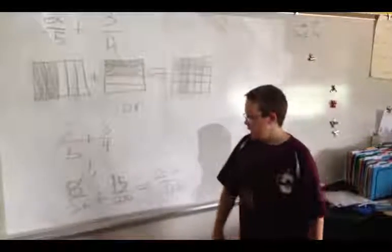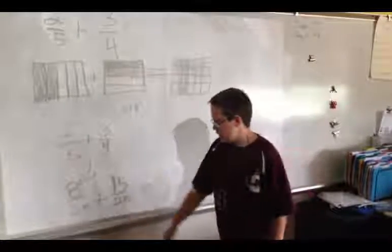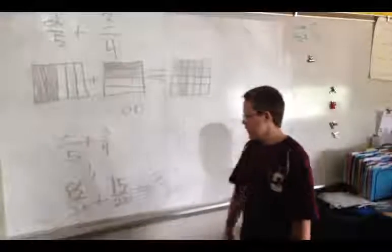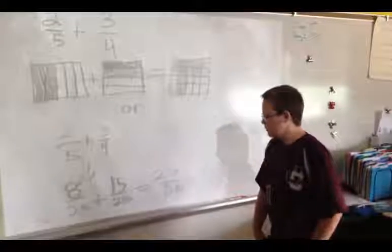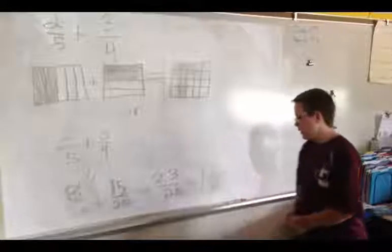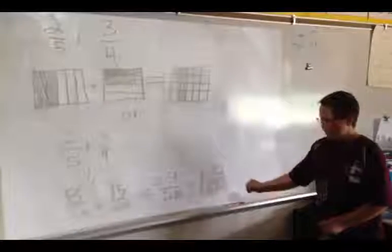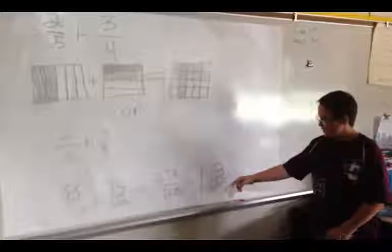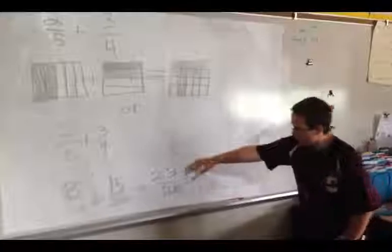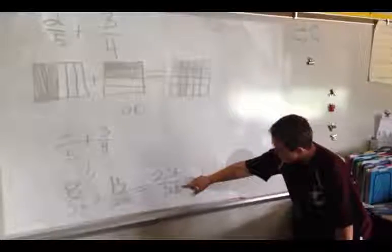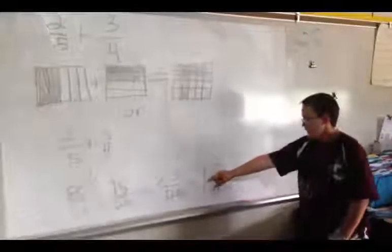And then 5 times 3 equals 15. So I got 8 twentieths plus 15 twentieths, and that equals 23 twentieths. And that is over the — [student pauses] — [teacher prompts for the picture explanation].